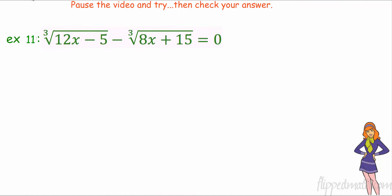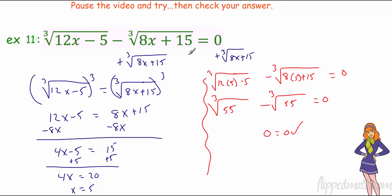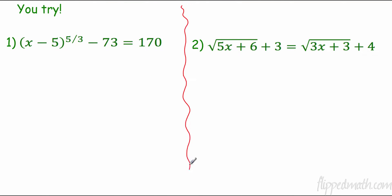Pause the video and try this one. Hint: move the cube root of 8x plus 15 to the other side first. Adding it to both sides, then raising each side to the third power gives 12x minus 5 equals 8x plus 15. Combine x terms, add 5, divide by 4, and x equals 5. This solution checked out. So Mr. Brust, you got one good answer.